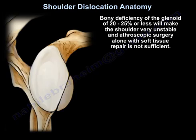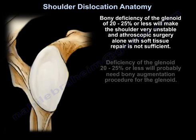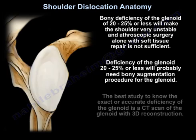Bony Bankart will be present in about 50% of patients with recurrent dislocation. Bony deficiency of the glenoid of 20 to 25% or more will make the shoulder very unstable and arthroscopic surgery alone with soft tissue repair is not sufficient. The best study to assess accurate deficiency of the glenoid is a CT scan with 3D reconstruction.